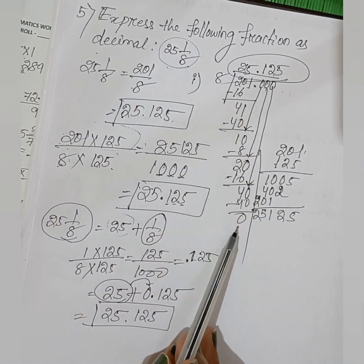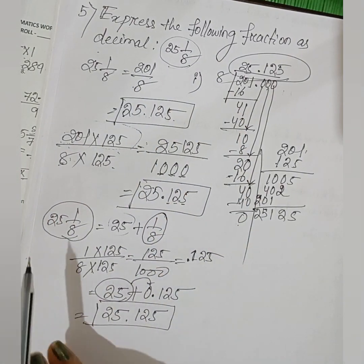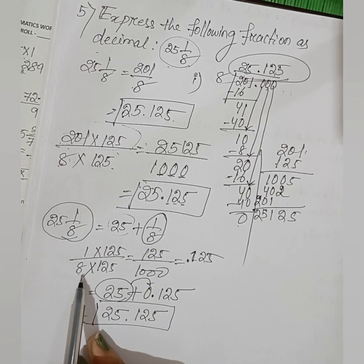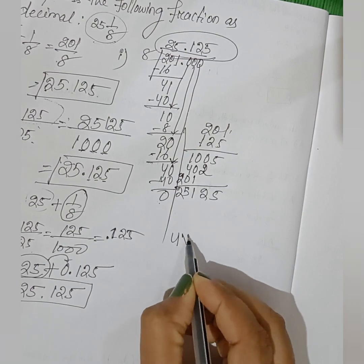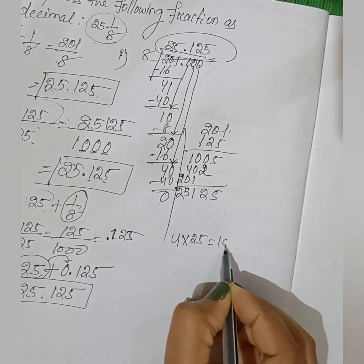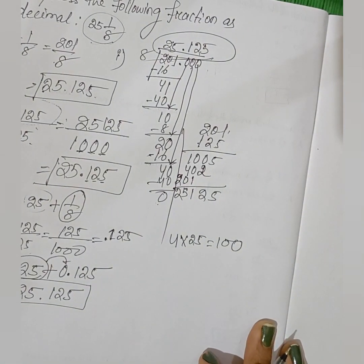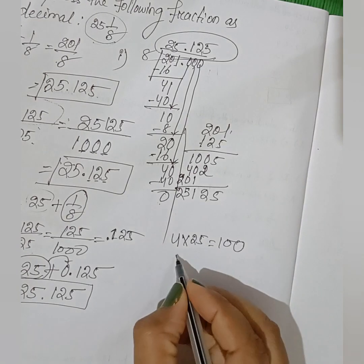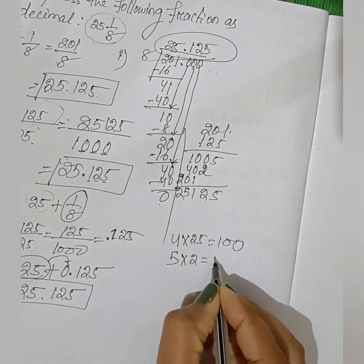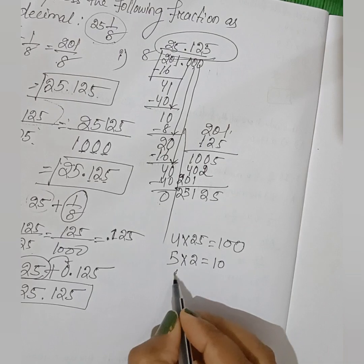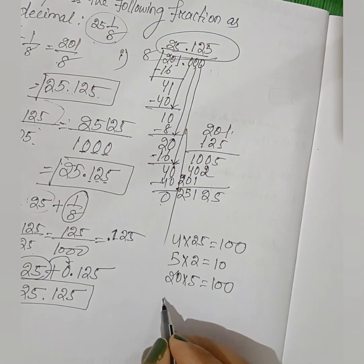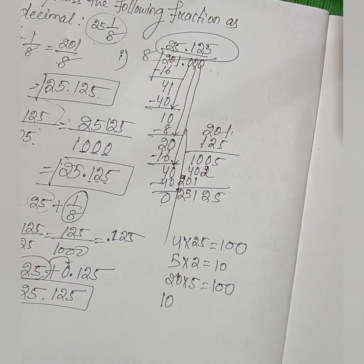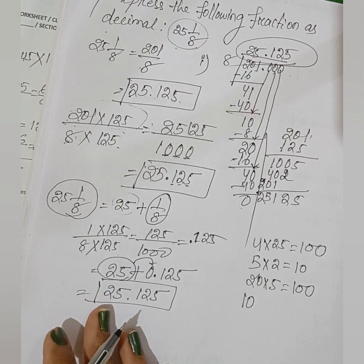The third method is easier — you just handle the division. Remember: multiply 8 by 125 to get 1000; multiply 4 by 25 to get 100; multiply 5 by 2 to get 10; multiply 20 by 5 to get 100; with 10 it remains 10. Similarly for 16 and others.